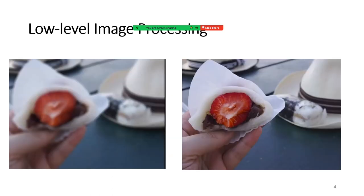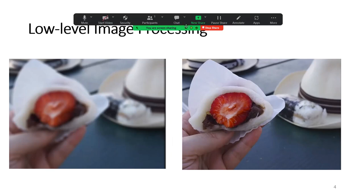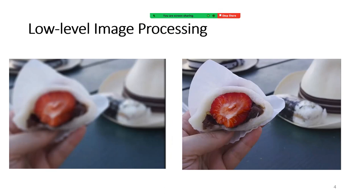In digital image processing, we have three categories of tasks. The first task is called low-level image processing. Low-level image processing involves tasks like enhancing the quality of the image, removing blur from the image, and so forth. This image enhancement is called low-level processing.